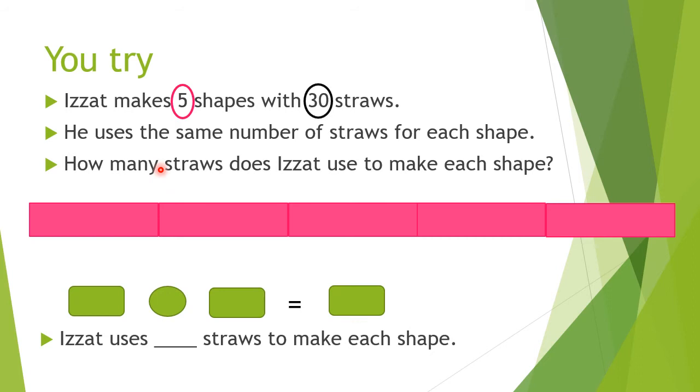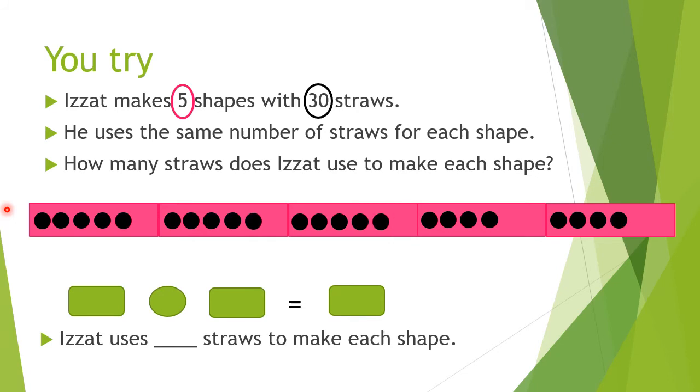Now we get the bigger number, 30, and we put it in the box one by one. So counting from 1 to 30, placing dots in each box sequentially. Okay, we've drawn 30.